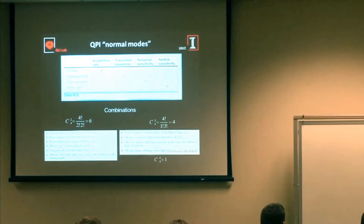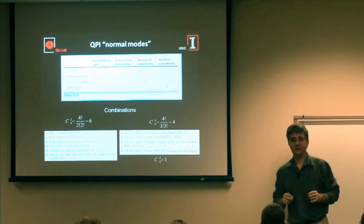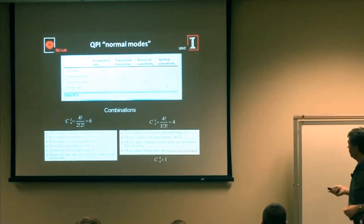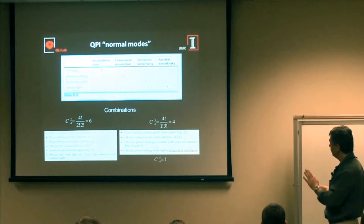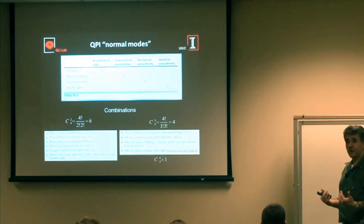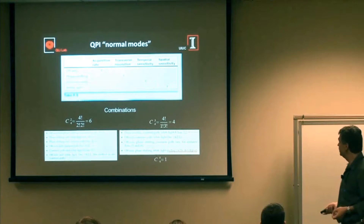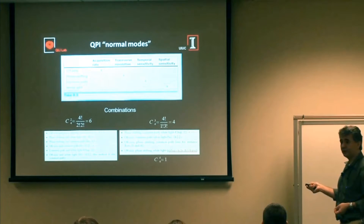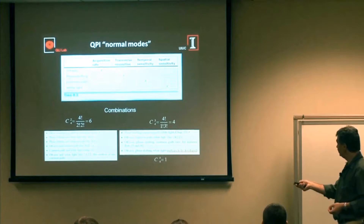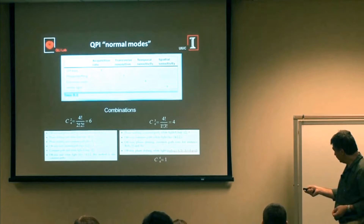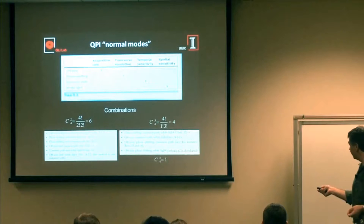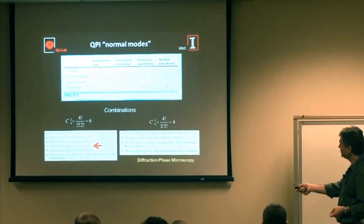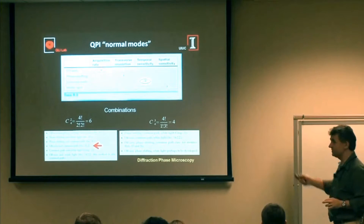I'm going to tell you about two methods: one laser-based that we developed when I was a postdoc, and a white light one that we developed here at Beckman which I think is much better. The reason there are so many QPI methods published is that you can combine any two of these four features — off-axis, phase shifting, common path, white light — giving six combinations, plus four more from groups of three, plus one combining all four. Back when I wrote this, there was one combination — off-axis, phase-shifting, and white light — that wasn't published, but that's no longer the case.